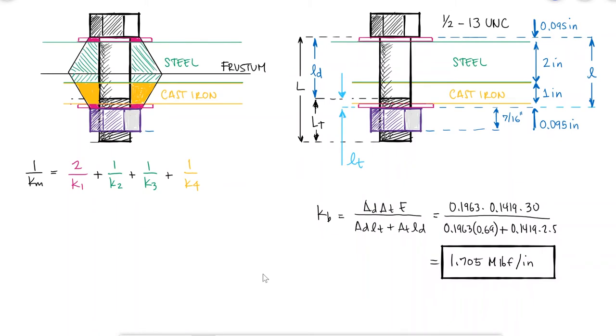For each one of these k values, we're gonna need the thickness t, the inner diameter d, the starting outer diameter of the cone for each section, capital D, and the elastic modulus.